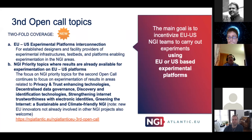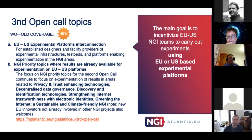The topic areas for this call are twofold: EU-US experimental platforms interconnection, enabling mature platforms to interconnect and carry out experiments available for remaining calls four and five. We've also expanded topic coverage to include key enabling NGI technologies such as IoT, AI, VR, privacy and trust, decentralized data governance, discovery and identification technologies, strengthening internet trustworthiness with electronic IDs, and greening the internet with a sustainable and climate-friendly NGI.